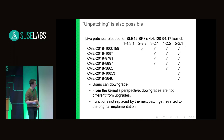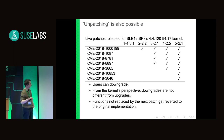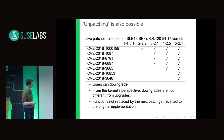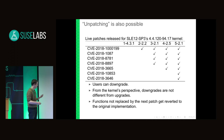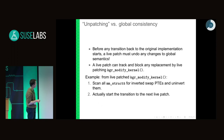If you change global state — say we have inverted swap PTEs and now we are downgrading to an older live-patch — the swap handling code won't be able to cope with the inverted swap PTEs anymore, so we have to undo this global semantics change.